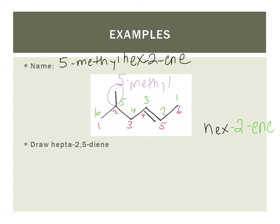Alright, but naming is only half the battle. We have to draw them as well. So we're going to look first at our root and see that hept means that it is 7 carbons long. So 1, 2, 3, 4, 5, 6, 7, and it ends in ene. So we know that the parent chain must contain a double bond.